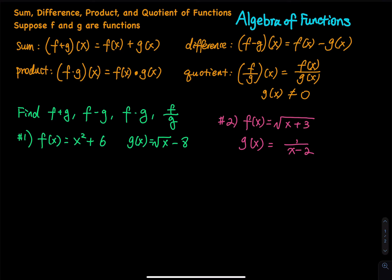Algebra of functions is very easy. There is a sum, difference, product, and quotient of two functions. Suppose we have function f and function g. Let's take a look at the sum. The sum f plus g of x is equal to f of x plus g of x.